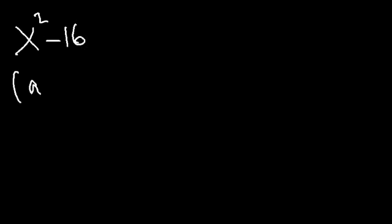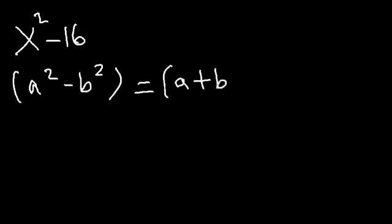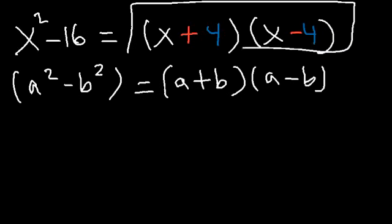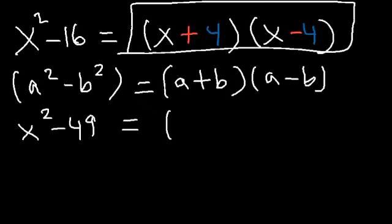Let's begin with the difference of perfect squares. If we have x² - 16, using the formula a² - b² = (a + b)(a - b), the square root of x² is x and the square root of 16 is 4, so x² - 16 factors as (x + 4)(x - 4).